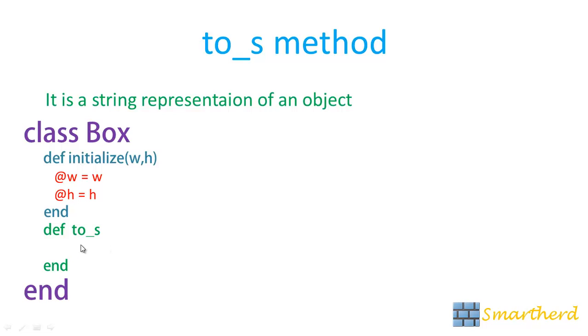In this code we have to return the string that we want to print. That is here we are returning width is interpolation @w and height is interpolation @h. This will return width is 10 height is 20 if we are having the variable as 10 and 20.